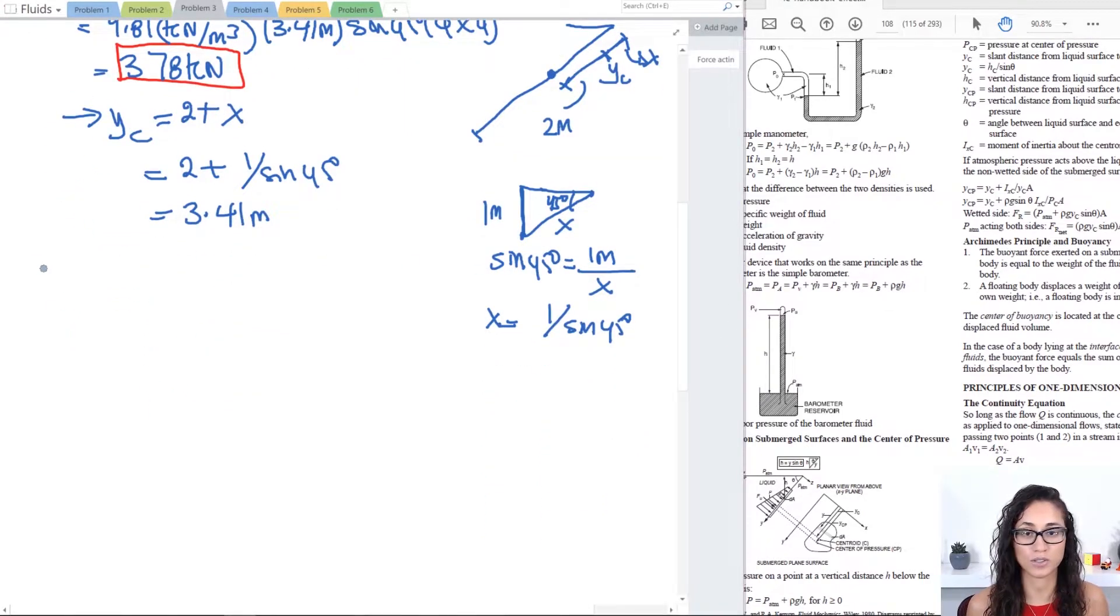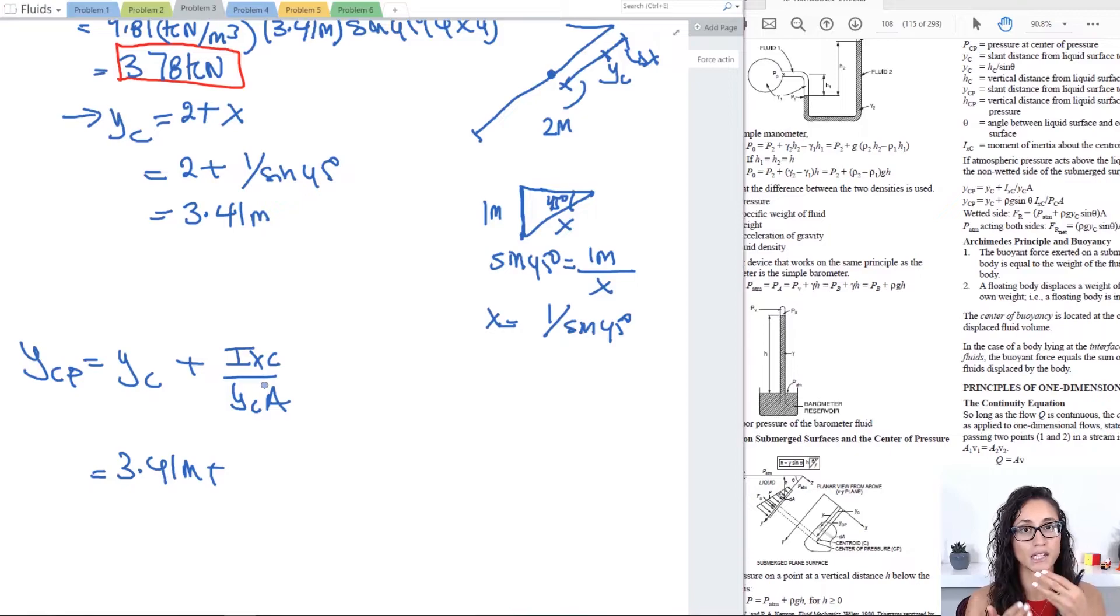So the location, we're going to write the equation down. We have YCP. CP stands for the center of pressure, equals YC plus the moment of inertia divided by YC times the area. Now YC is 3.41 meters plus the moment of inertia from statics. You learned that moment of inertia of a square or rectangular shape is always BH cubed over 12.